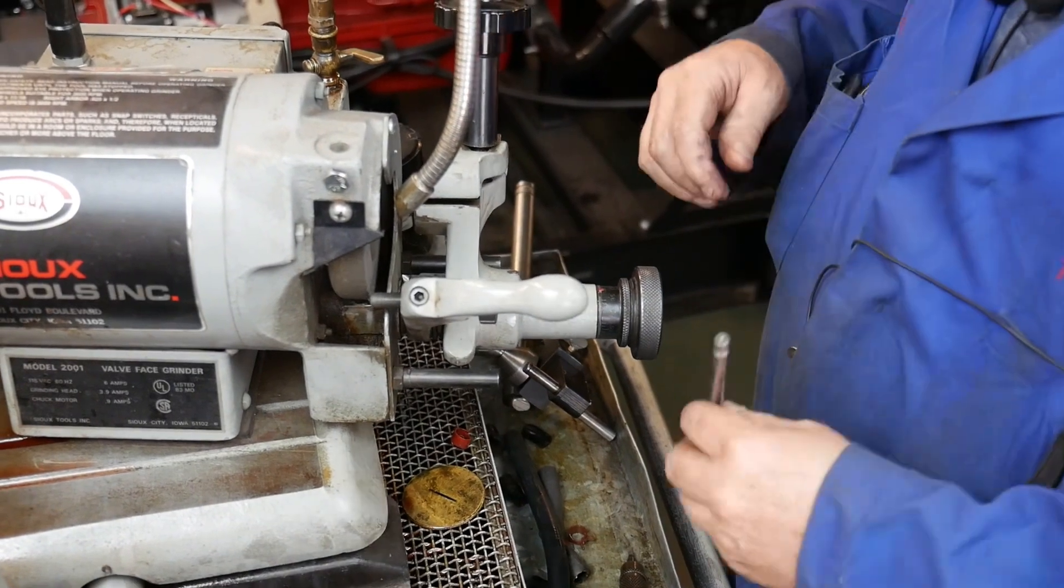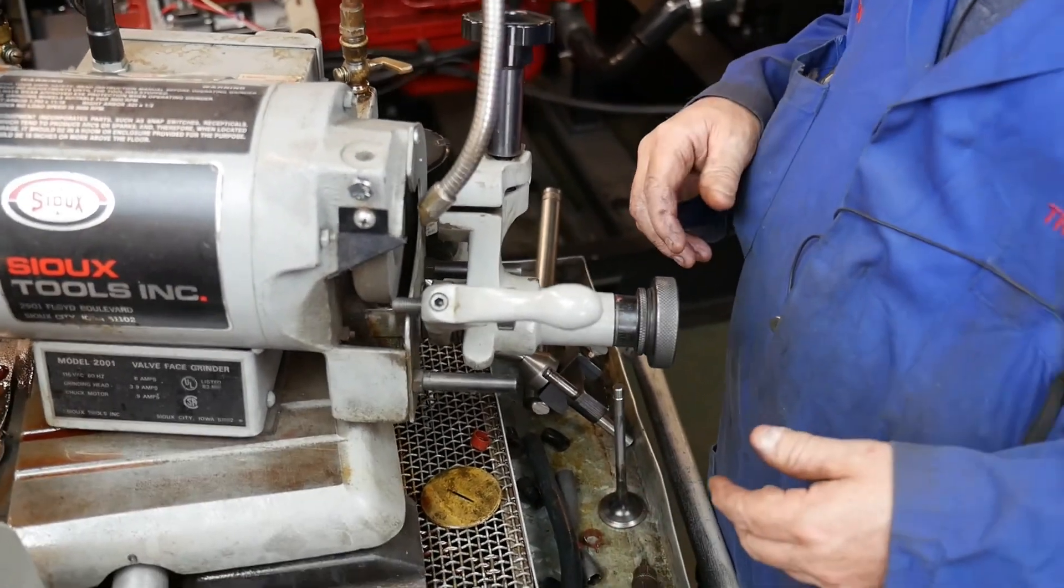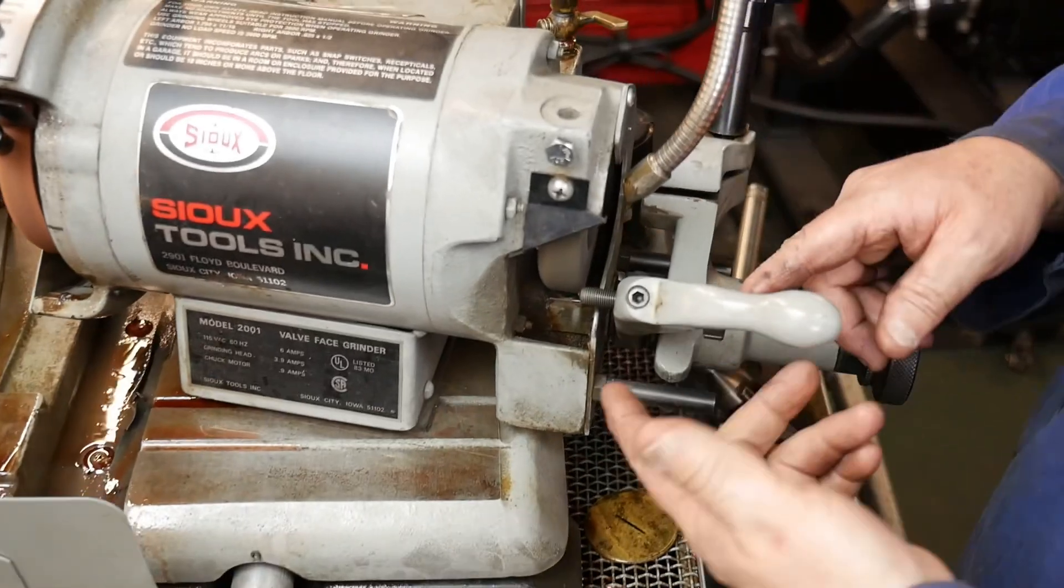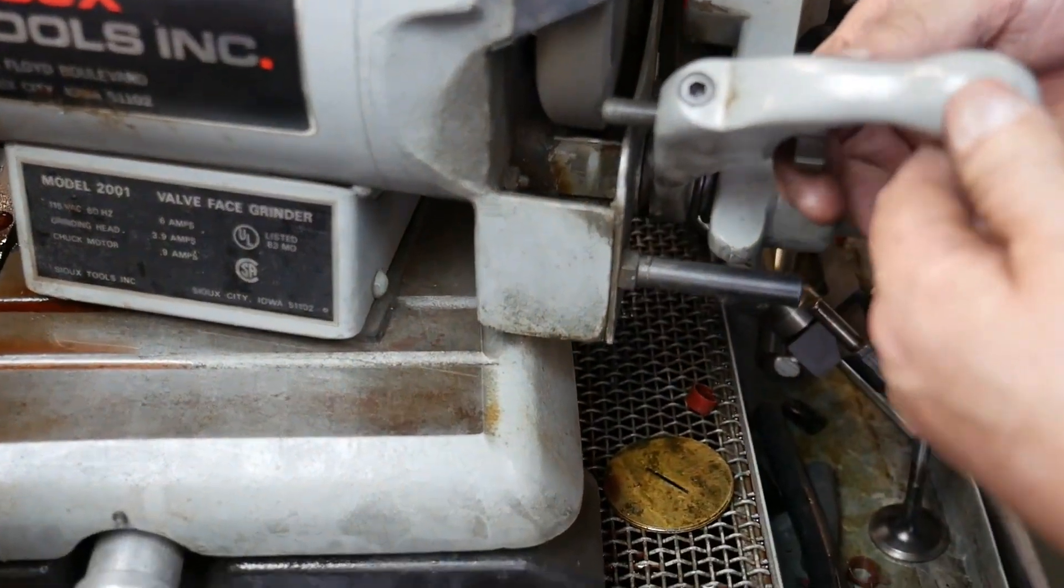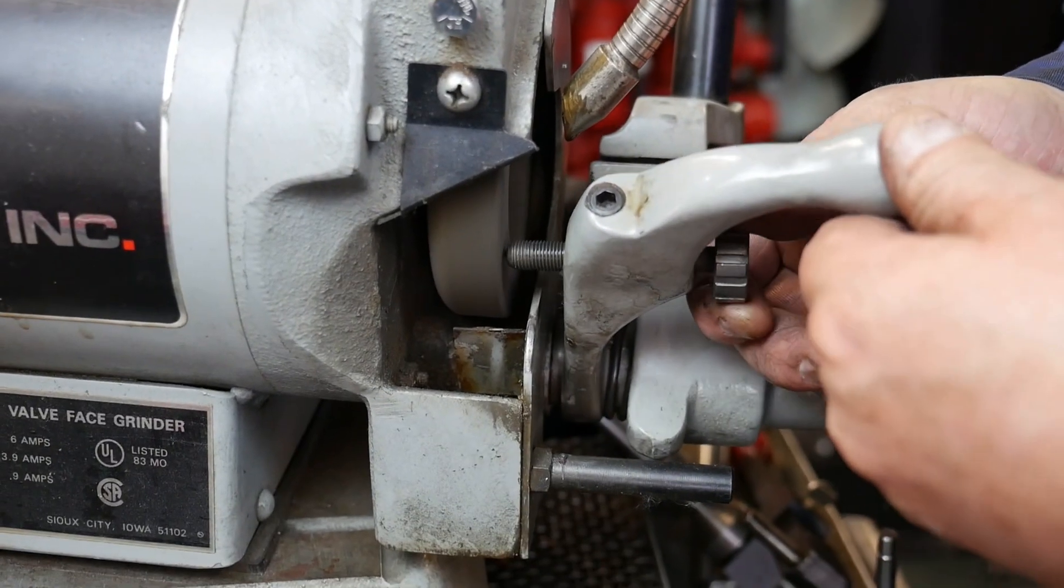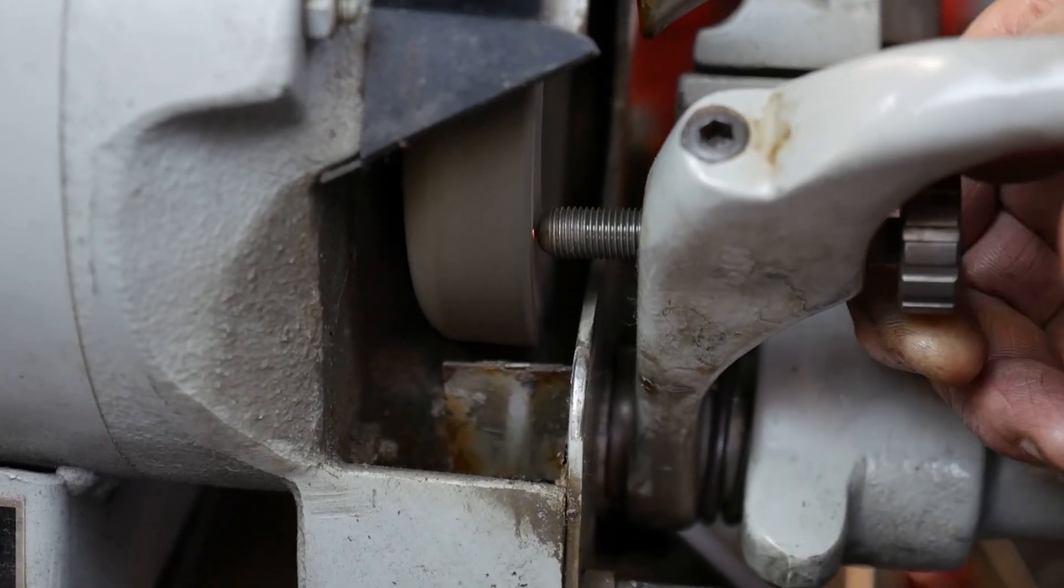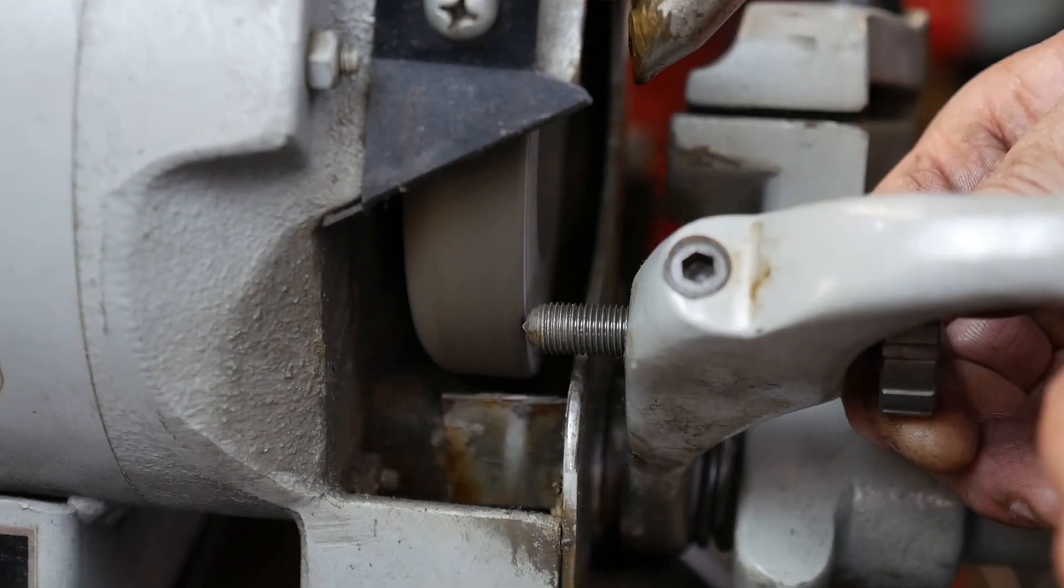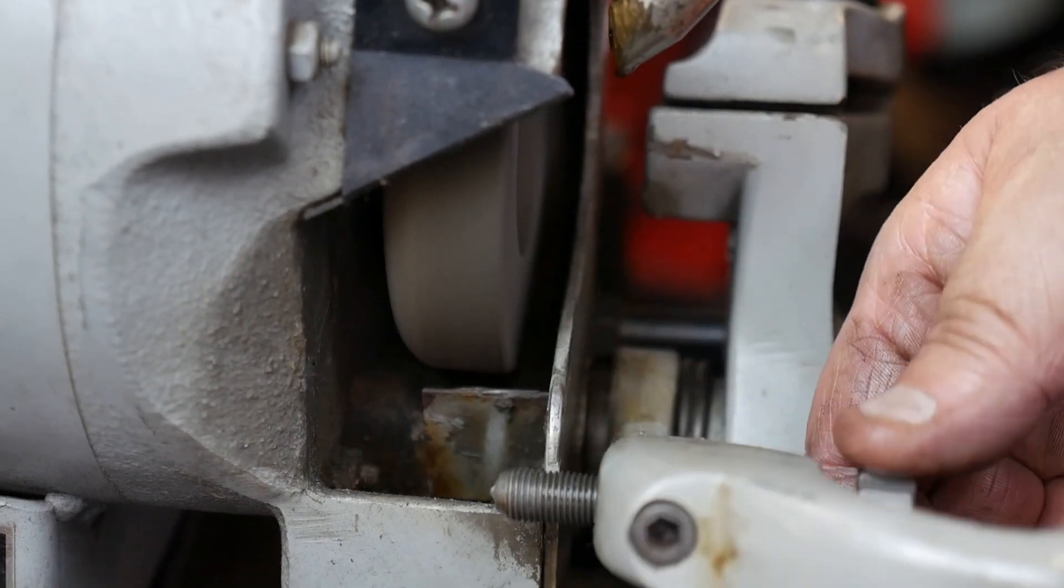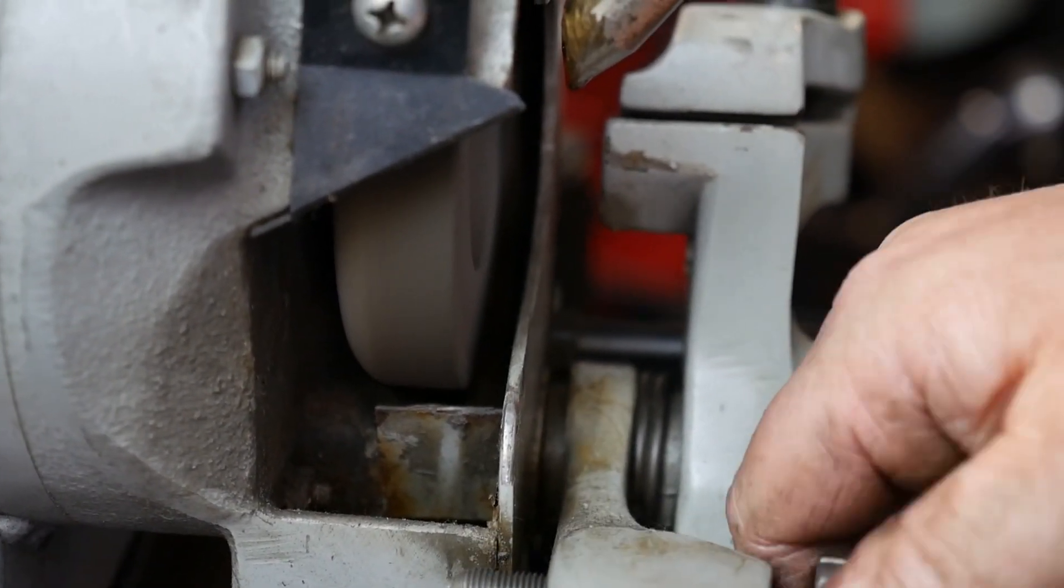Before we can grind that, we need to dress our stone. We have a stone dressing tool that's part of the machine here. It has a diamond tip in the end and we'll bring that up till it contacts. We don't want to take any more off the stone than we have to. Now that stone is true and clean with a good clean surface which will grind nicer on the valve.